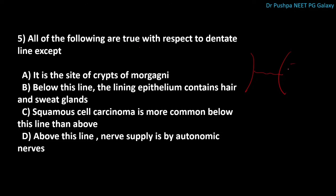The dentate line is an important landmark for surgeons. If a hemorrhoid is present above the dentate line it is an internal hemorrhoid. If a fistula is above the dentate line it is a high fistula; below is a low fistula. The lining epithelium below the dentate line is columnar epithelium. The most common cancer occurring below the dentate line is squamous cell carcinoma. Above the dentate line the most common cancer is adenocarcinoma.